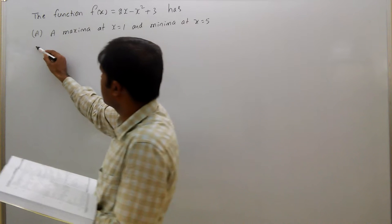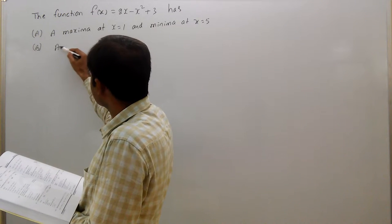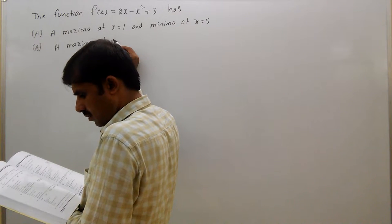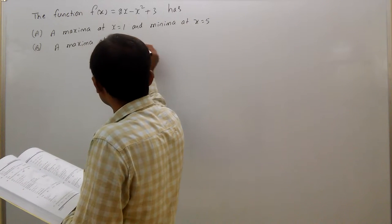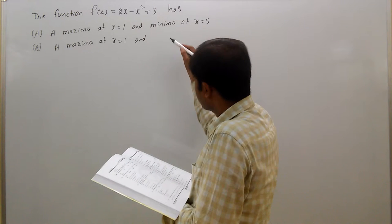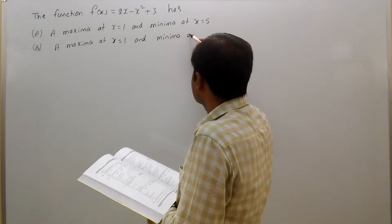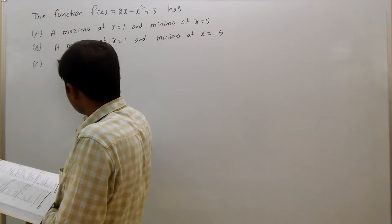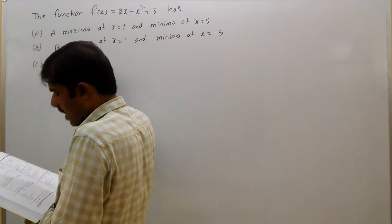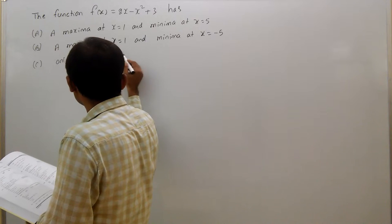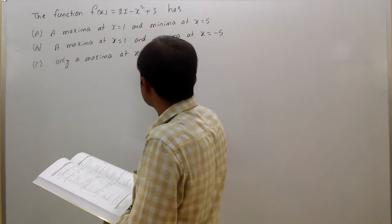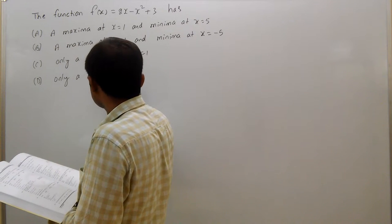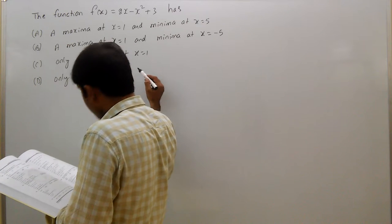Option b: a maxima at x = 1 and minima at x = -5. Option c: only a maxima at x = 1. Option d: only a minima at x = 1.